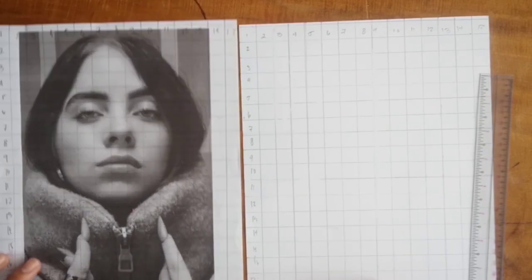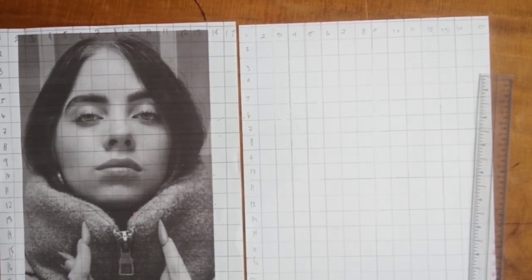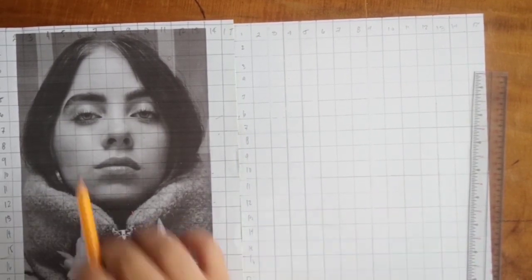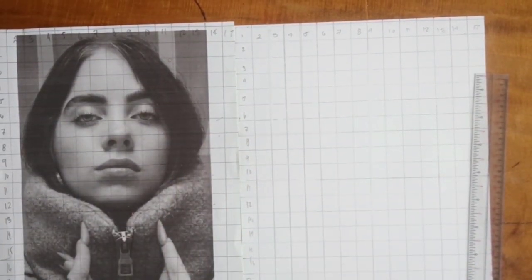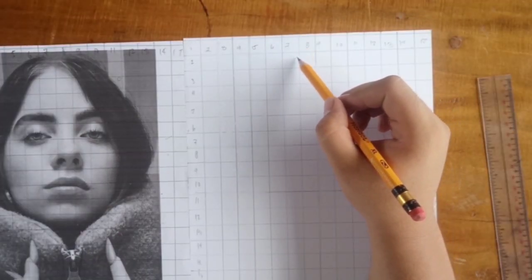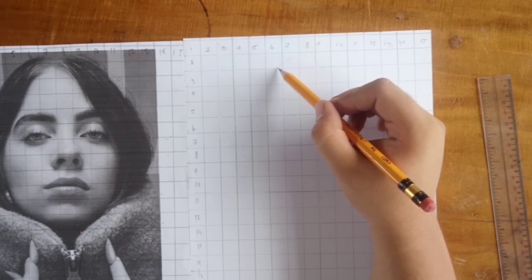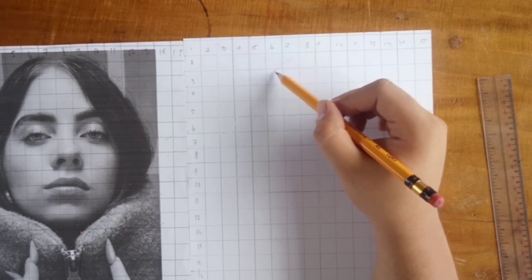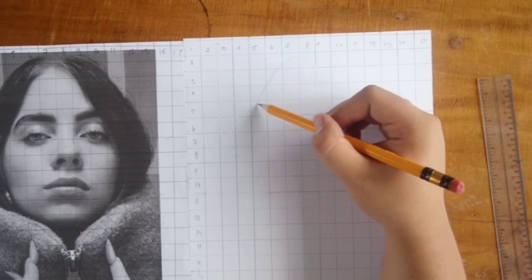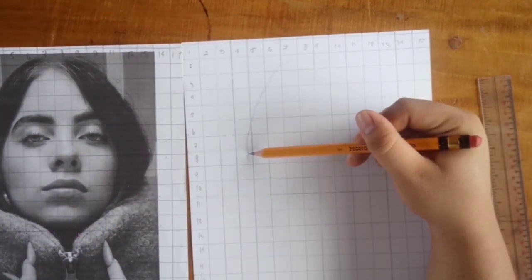Tapos na natin managyan ng grid itong blank paper natin, and ready to sketch na tayo. As you can see, same yung measurement na ginawa ko dito sa reference natin, para accurate yung paggaya natin. Sinisimulan ko ng pag-i-sketch, sinimulan ko muna sa shape lang mukha, bago yung sa loob. Pero, depend na sa'yo kung saan mo gusto magsimula, kahit saan naman, basta kung ano yung nasa box, yun din yung gagayahin mo.